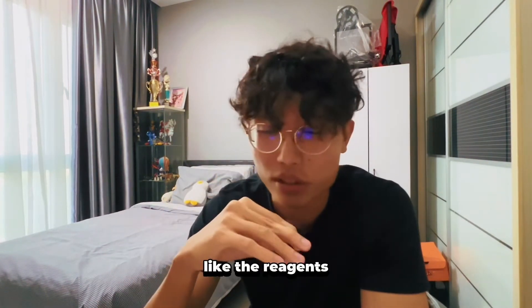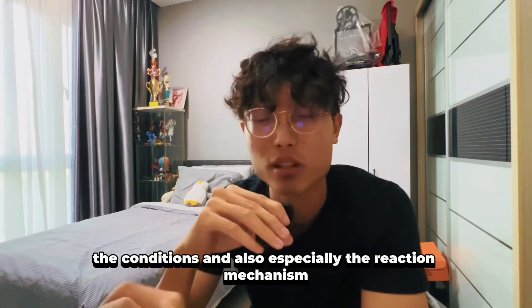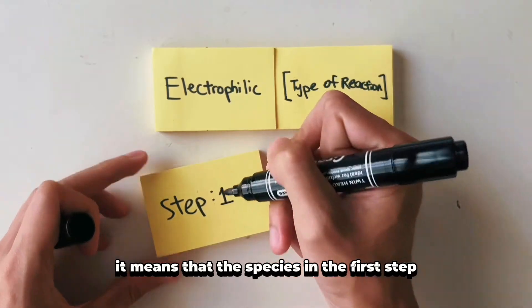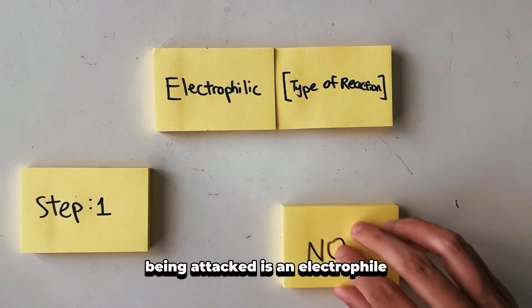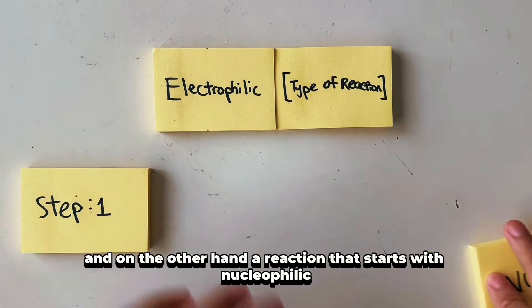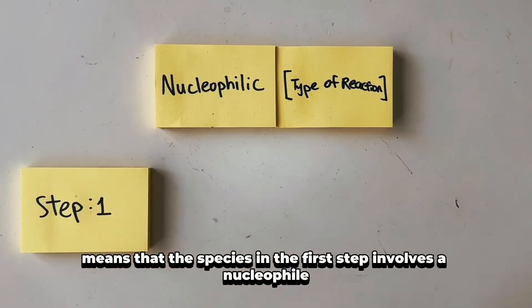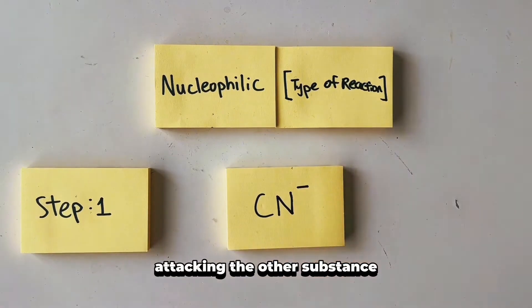When the reaction starts with the word electrophilic, it means that the species in the first step being attacked is an electrophile. On the other hand, a reaction that starts with nucleophilic means that the species in the first step involves a nucleophile attacking the other substance.